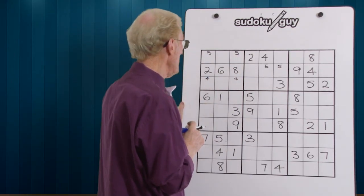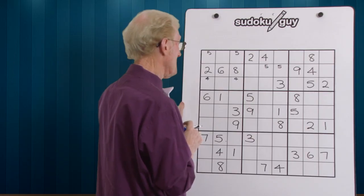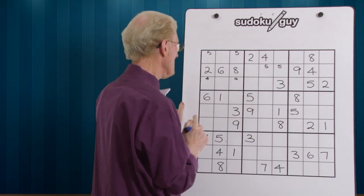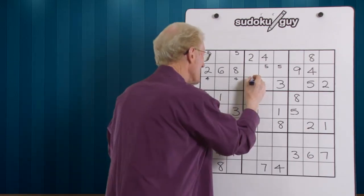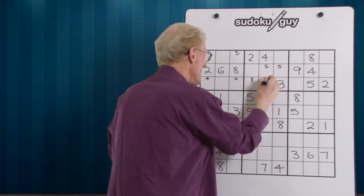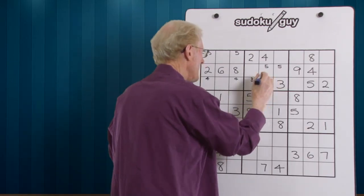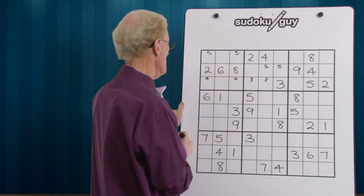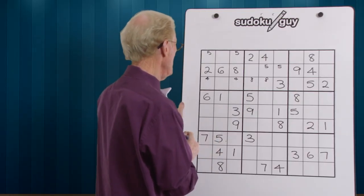Moving right along. Six - there's only one six. Seven - there's no sevens. Eight - there's two eights; an eight here and an eight here. Nine - there's only one nine.